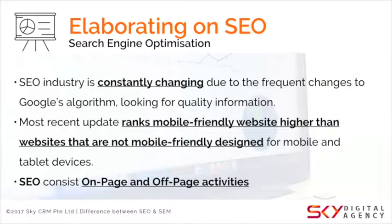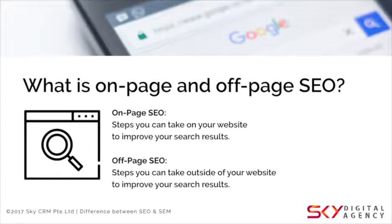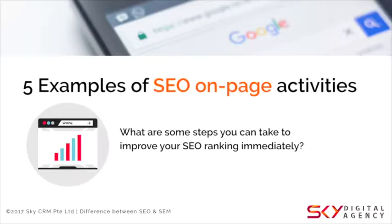SEO consists of on-page and off-page activities — two components. On-page means things you do on your website to improve your search results. Off-page means steps you take outside of your website to improve your search ranking and drive traffic. We're going to give you some examples of both.